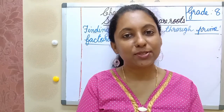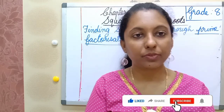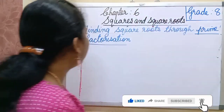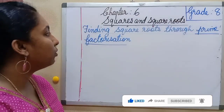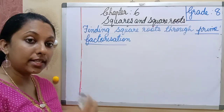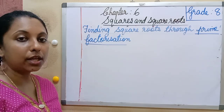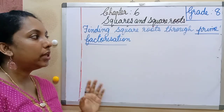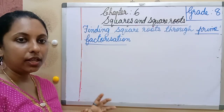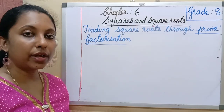Hi everyone, welcome back. Previous class we discussed finding the square root of a number using repeated subtraction. Today we continue with finding square roots through prime factorization. The repeated subtraction method is time-consuming for bigger numbers, so prime factorization is a little bit simpler for finding the square root.